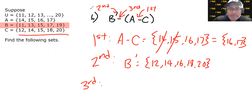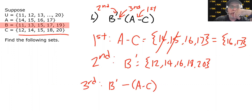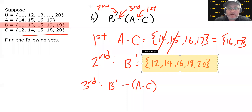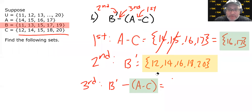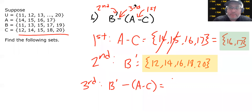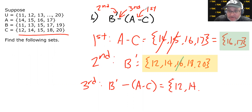Step three, the final set difference: B'-(A-C). We start with B complement — {12, 14, 16, 18, 20} — and remove anything belonging to (A-C), which is {16, 17}. Only 16 appears in B complement, so we cross it out. Our final answer is {12, 14, 18, 20}.